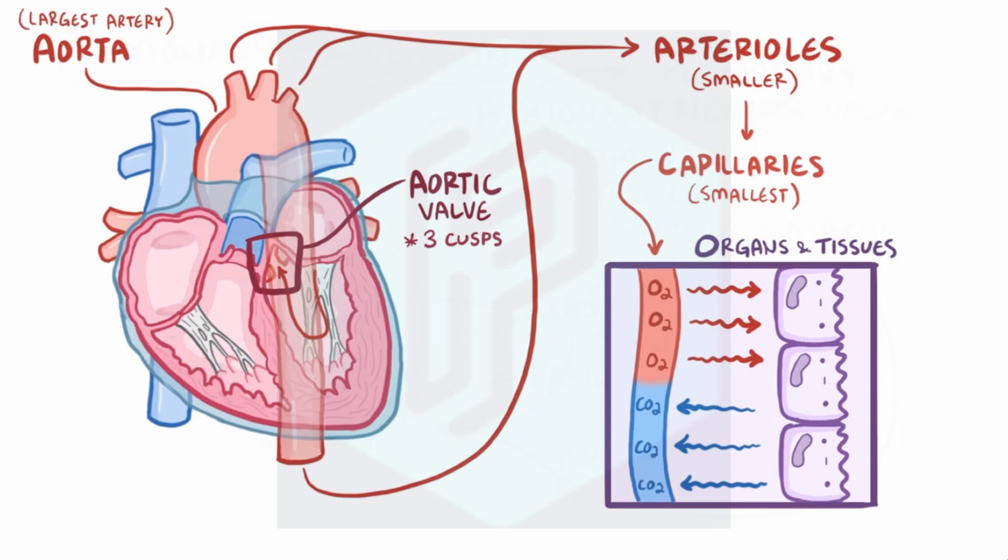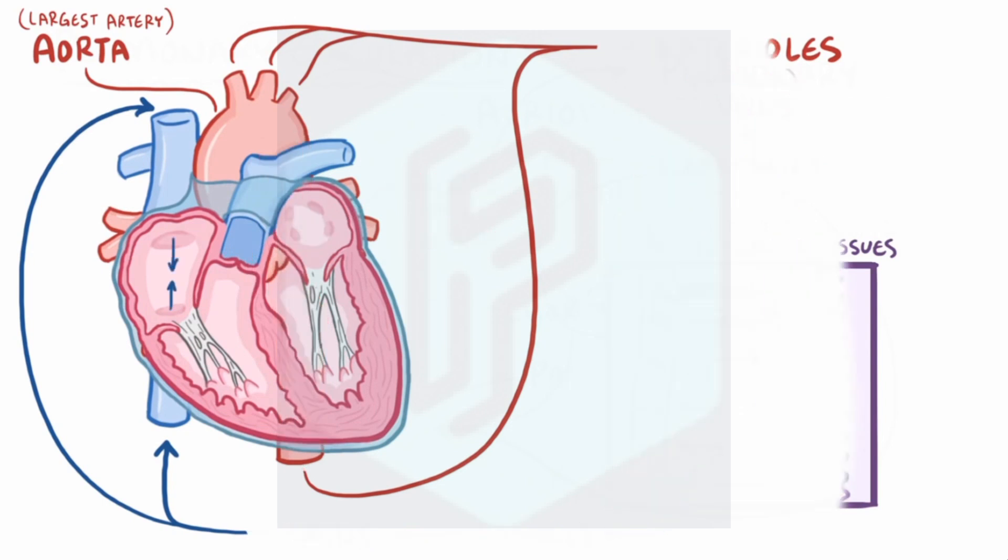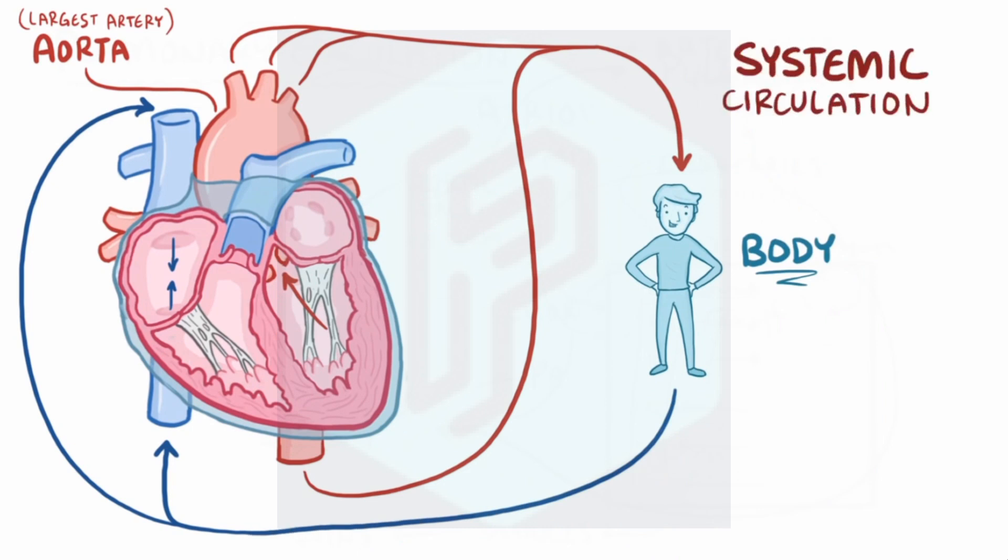Loaded up with carbon dioxide, the blood turns that dark red color again, shown as blue, and starts the return journey to the heart by going into small venules and then larger veins. Now the lower half of the body drains into the inferior vena cava, and the upper half drains into the superior vena cava, both of which dump blood back into the right atrium. So this trip from the left ventricle of the heart to the body and back to the right atrium of the heart is called the systemic circulation.